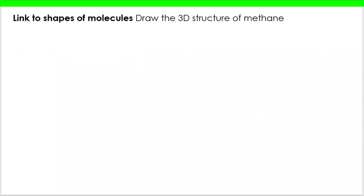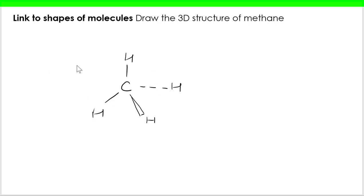Just to finish off this video — part one of this series — let's link back to bonding and try to draw out the 3D structure of methane. Hopefully you've remembered that the carbon is surrounded by four hydrogens, it's tetrahedral, with a bond angle of 109.5 degrees. We represent one bond coming out of the paper and one bond going into the paper. That takes us to the end of this section — thank you for listening, goodbye.